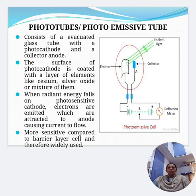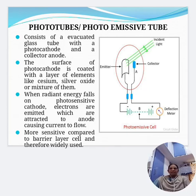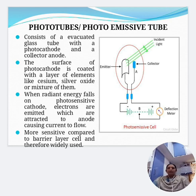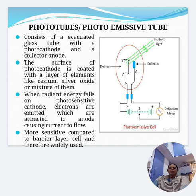Photo tubes or photoemissive tubes consist of an evacuated glass tube with a photocathode made of a light-sensitive material and a collector anode. The surface of the photocathode is coated with cesium, silver oxide, or a mixture of them. When radiant energy falls on the photosensitive cathode, electrons are emitted and attracted towards the anode, causing current to flow through the external circuit. Photo tubes are more sensitive compared to barrier layer cells and are therefore widely used.